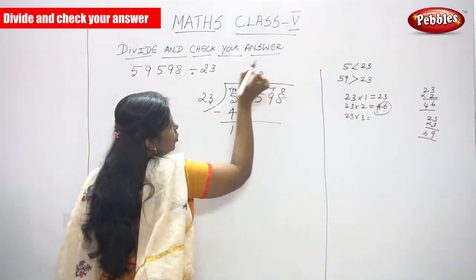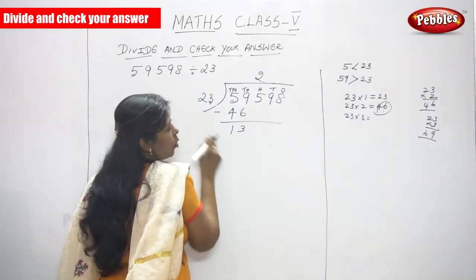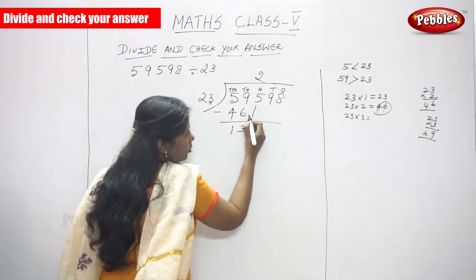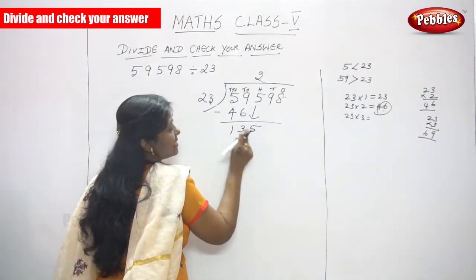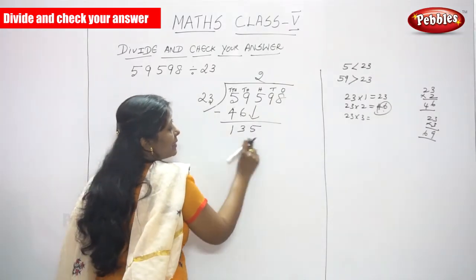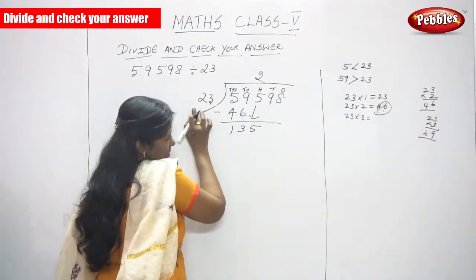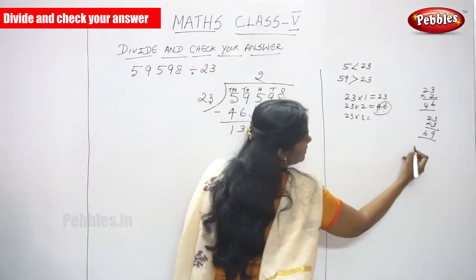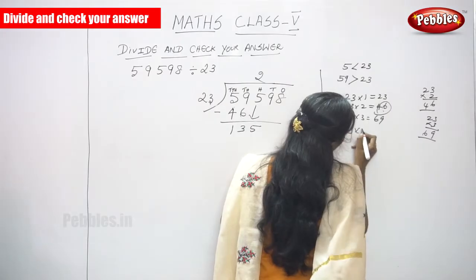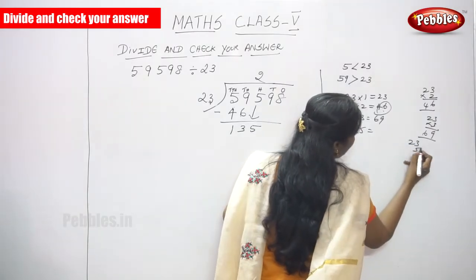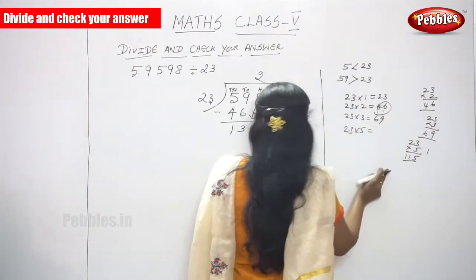23 into 2 is 46. So 13 is a lesser number than 23 — it should always be greater — so you have to bring down the next digit, that is 5. Now this number is 135, divided by 23. Because this dividend is greater than the divisor. Again, you write: 23 times 5 — 5 threes are 15 carry 1, 2 fives are 10, 10 plus 1 is 11 — so the number is 115. Shall we go to the next table? 23 multiplied by 6.